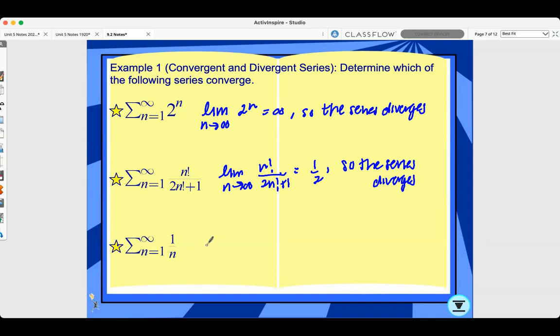The summation of 1 over n from n equals 1 to infinity. We need to find this limit again, and that equals 0. So the series might converge.